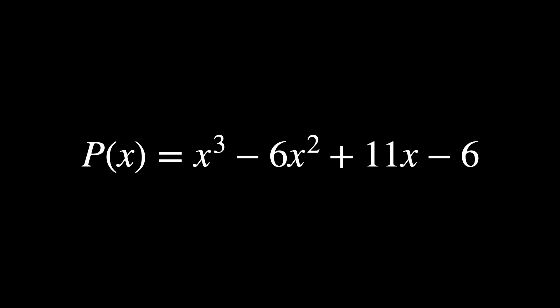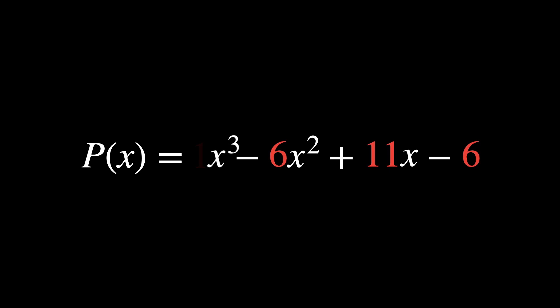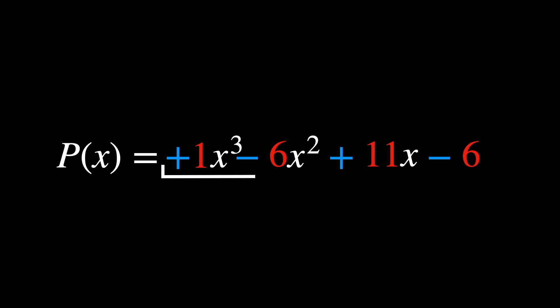Say we want to determine the number of positive and negative real roots of this polynomial. Descartes' rule of signs says that we need to count the sign change between consecutive terms. The concept of sign changes refers to the transition between positive and negative coefficients. Start by writing down the coefficients of the polynomial: 1, minus 6, 11, minus 6. Now, observe the signs: plus, minus, plus, minus. A sign change occurs when you move from a positive coefficient to a negative one, or vice versa. The first sign change happens between plus 1 and minus 6. The second sign change happens between plus 11 and minus 6.